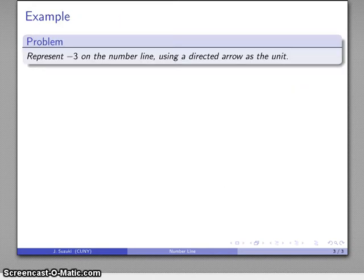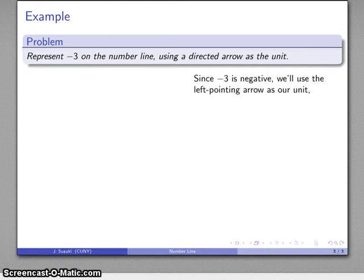Well, let's see if we can do that. So I'm going to represent -3 on the number line and I want to use a directed arrow as my unit. So since -3 is negative, I want to use the left pointing arrow as my unit. So there's my unit. There's my origin. And what do I want?